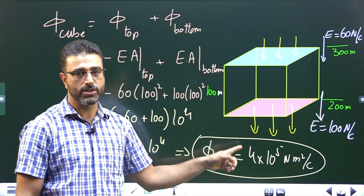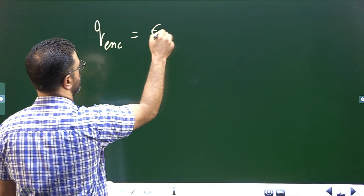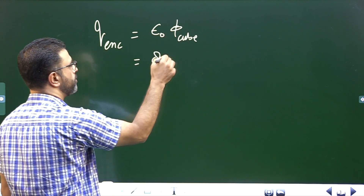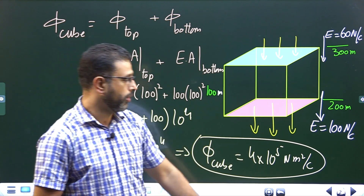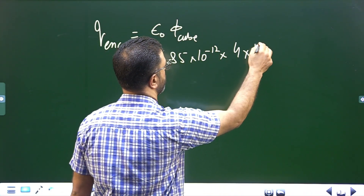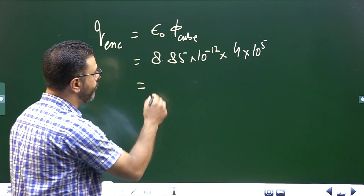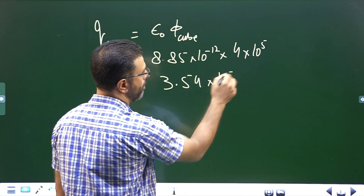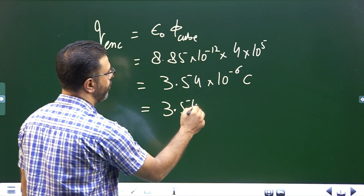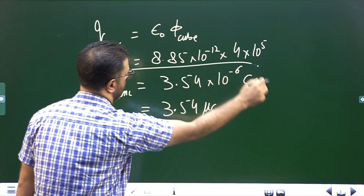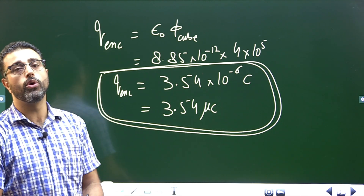Net flux is positive. Now, charge enclosed by the cube — we'll use Gauss's law. Charge enclosed equals epsilon-zero times flux through the cube. Epsilon-zero is 8.85 times 10 to the power minus 12 in SI units, and flux through the cube is 4 times 10 to the power 5. This comes out to be 3.54 times 10 to the power minus 6 coulombs, which is 3.54 microcoulombs. So the charge enclosed by this imaginary cube in the atmosphere is 3.54 microcoulombs.